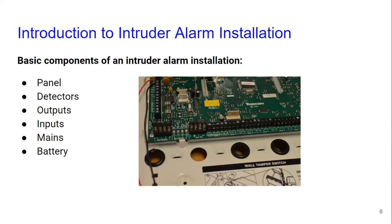What are the basic components of an intruder alarm system? You have a panel and detectors. Different types of detectors include door contacts, passive infrared, panic alarms, smoke, and heat detectors. Then you have the panel with outputs and inputs. Output could be something like a bell, and you can also have communication devices connected to the output. Some panels have separate terminals for bell, others you have to program the output.